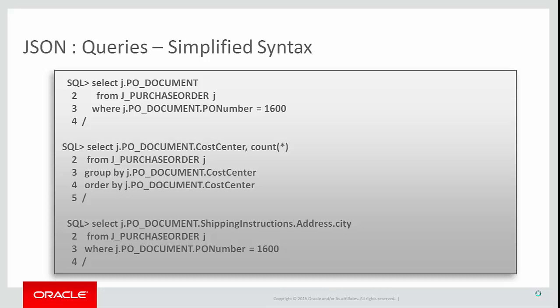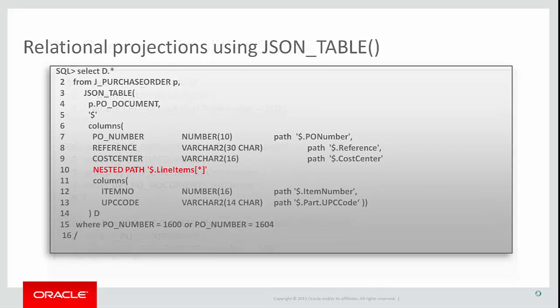In one example, selecting PO_DOCUMENT from table J_PURCHASE_ORDER and applying the predicate WHERE J.PO_DOCUMENT.PO_NUMBER = 1600 returns only documents that contain a top-level key PO_NUMBER with a value of 1600. Using the simplified syntax, I can use SQL's COUNT and GROUP BY functionality to perform an aggregation over content within JSON documents — for example, counting the number of JSON documents based on the value of a cost center key. The simplified syntax also allows navigating through nested hierarchies of objects, such as finding the value of a city key within an address key of a shipping instructions object.